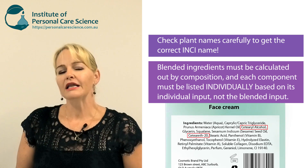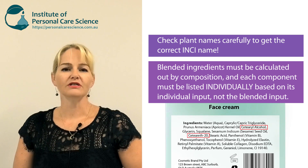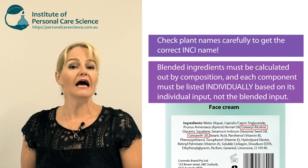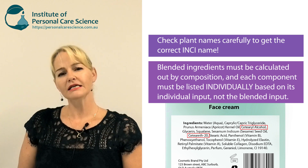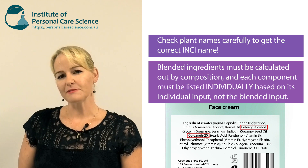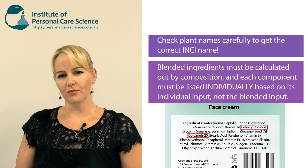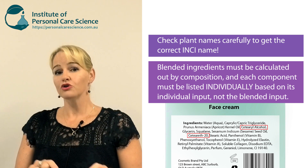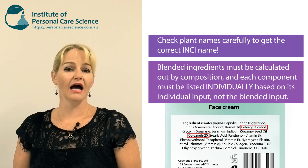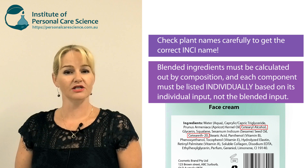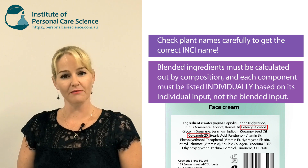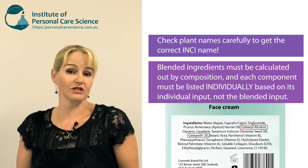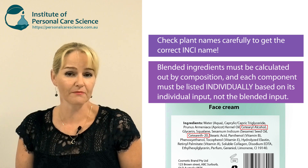For example, let's say you're using a cetearyl alcohol / ceteareth-20 emulsifier blend, and let's say you're putting this blend in your formula at 5%. It is not correct to list cetearyl alcohol and ceteareth-20 at the 5% point, because that's how much of the blended material you're using.